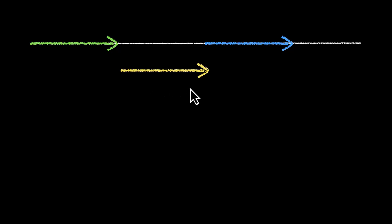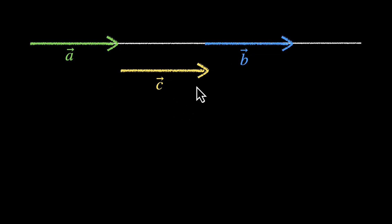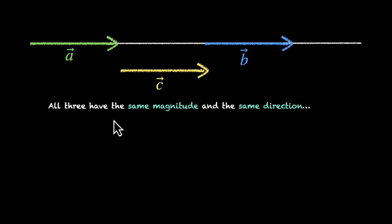I am going to show you three vectors and you are going to tell me whether they are equal or not. Here is a line and on this line we have this green vector, this blue vector, and here is a yellow vector on the side. Let's label them. This is A vector, B vector, and C vector. All three of them have the same magnitude and they are facing the same direction — they are all facing right.